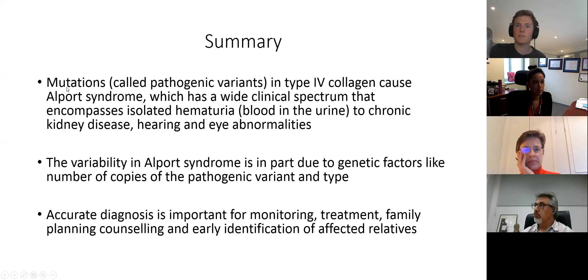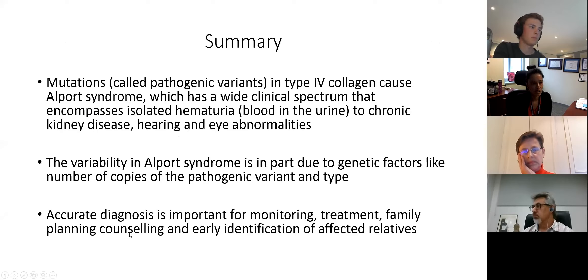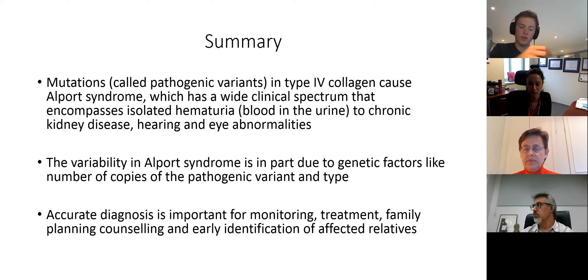To conclude: mutations — or more accurately, pathogenic variants — in type 4 collagen cause Alport syndrome, which has a wide clinical spectrum encompassing isolated hematuria to chronic kidney disease, hearing and eye abnormalities. The variability in Alport syndrome is in part due to genetic factors like the number of copies of the pathogenic variant and the type of variant. An accurate diagnosis is important for monitoring, treatment, family planning, counseling, and early identification of affected relatives. I'm happy to answer any other questions.